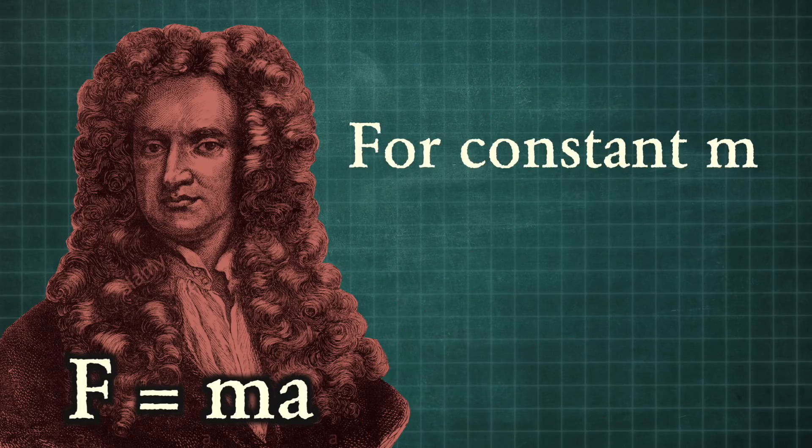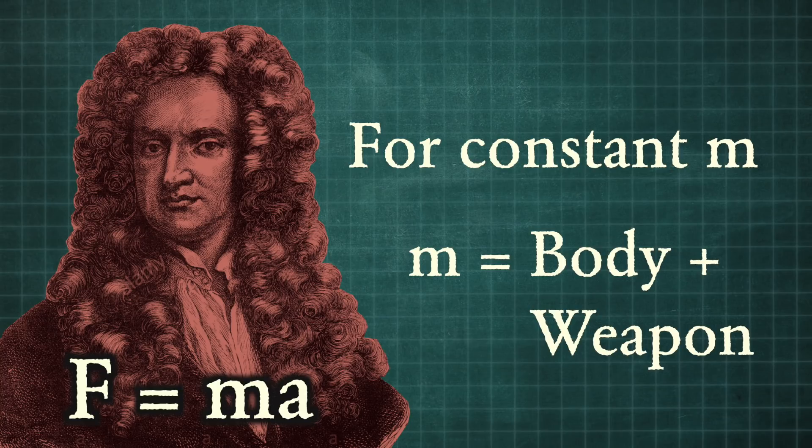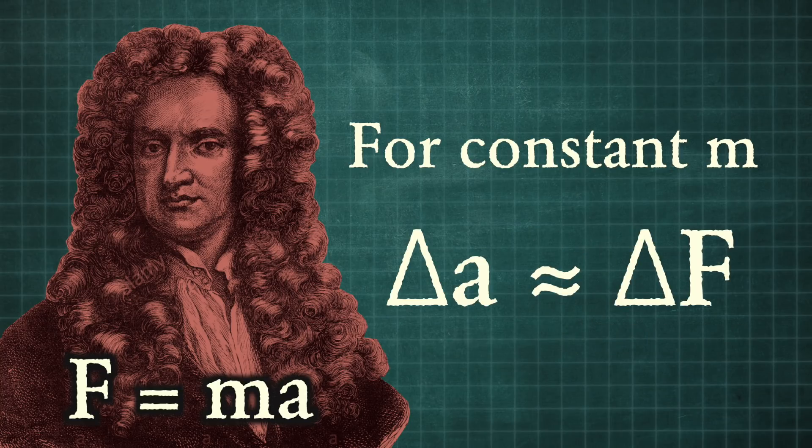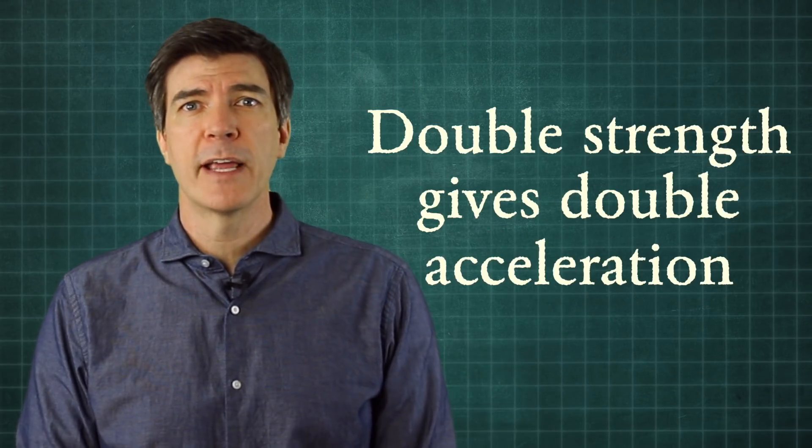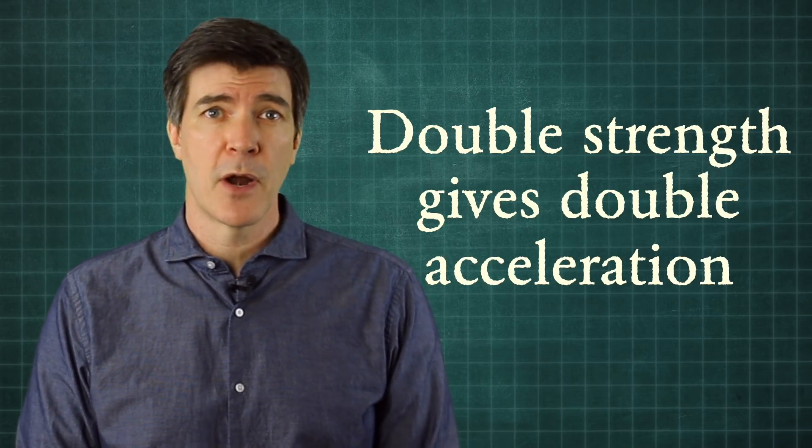If the mass in the system remains constant, in this case the mass of the fighter's body and the weapon he's swinging, then acceleration will increase in direct proportion to force. That means if the fighter has a 300 pound bench press, he'll theoretically generate twice the acceleration of a similarly sized fighter with a 150 pound bench press.